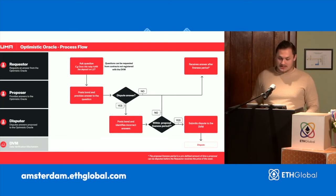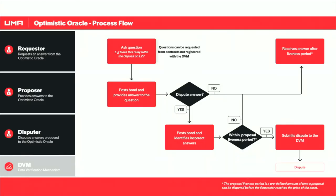What does an optimistic oracle look like at a more technical level? I like to describe it as very similar to an optimistic rollup, but just for the data layer instead of the consensus layer. The process works by a requester wanting some data, and someone will propose that data — just like in an optimistic rollup where you propose a series of transactions, wait a small period of time for people to check validity using fraud proofs, and at some point assume them to be true.